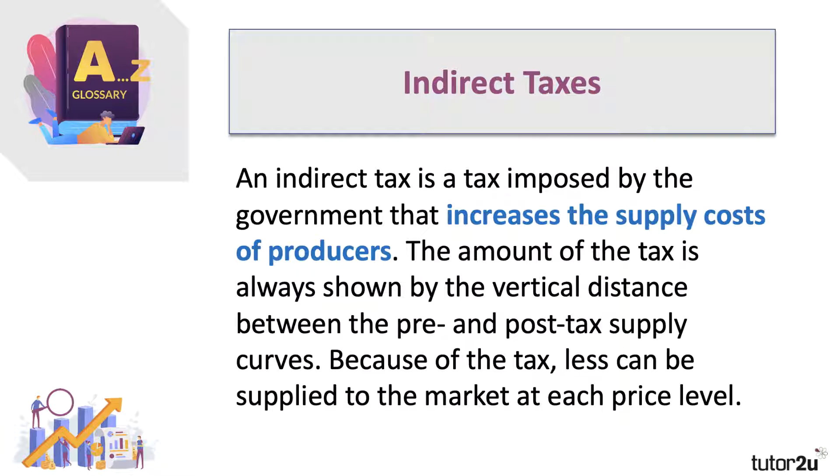Quick reminder, an indirect tax is a tax on spending, nearly always a tax on the supplier, which adds to their costs and the tax per unit is shown by the vertical distance between the pre and the post tax supply curves. Now, because of the tax, that means the supplier can't supply as much to the market at each price level.